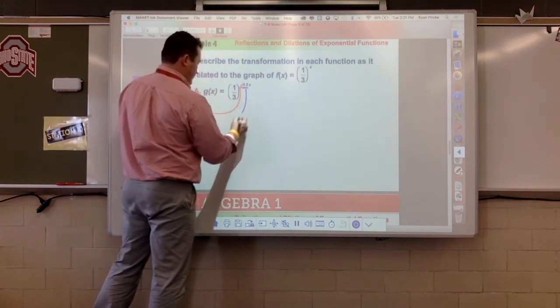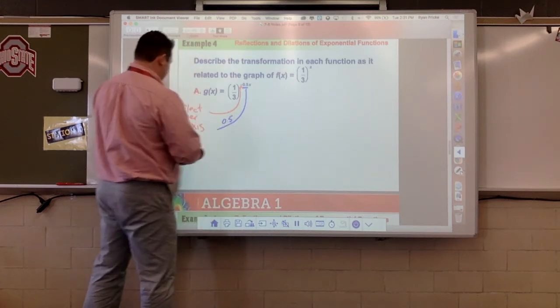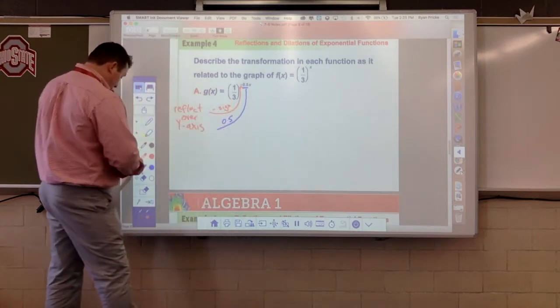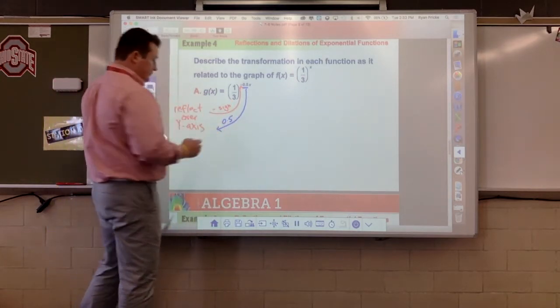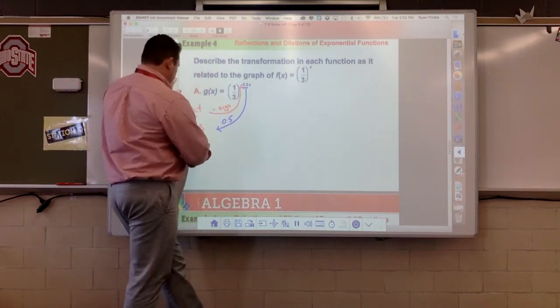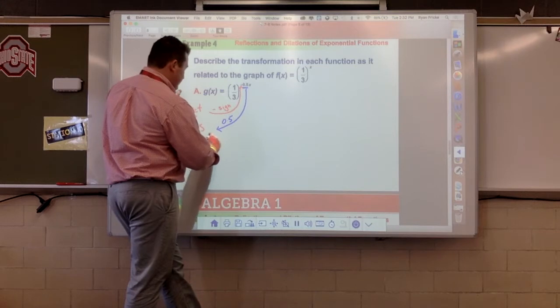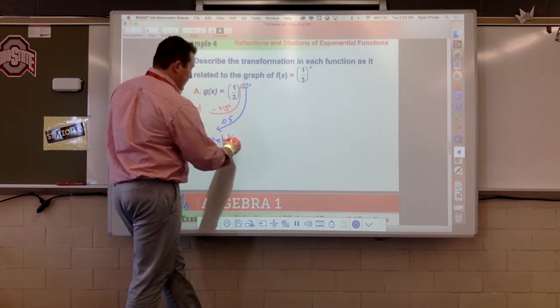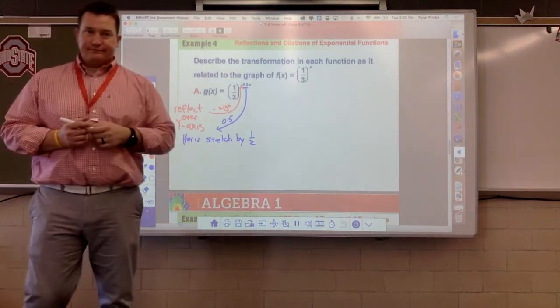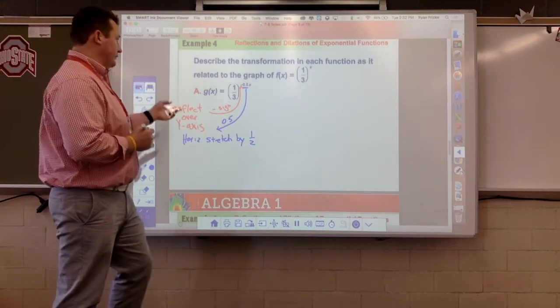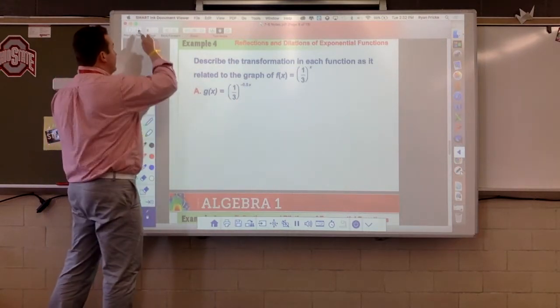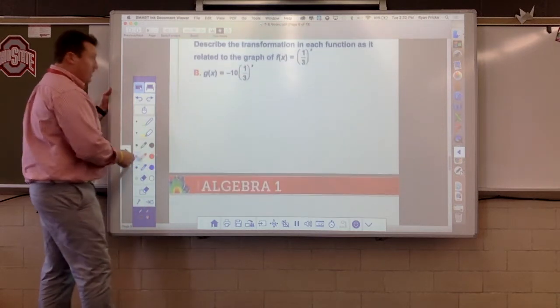Second move, right, is the 0.5. This was the negative sign. What does the 0.5 do? Well, this does a horizontal stretch. So horizontal stretch by a factor of one-half. Great. That's it. We're just identifying what is different and what moves does that make.